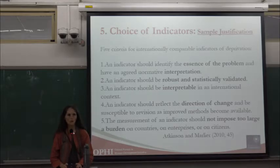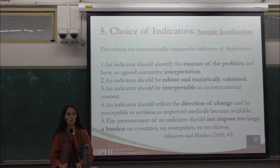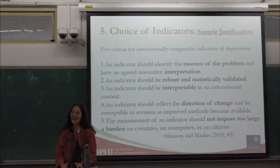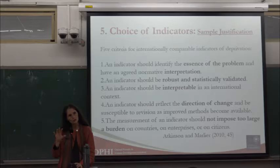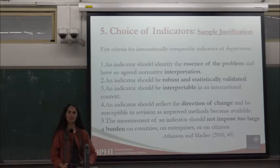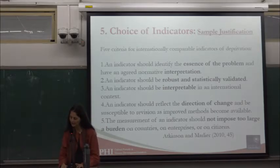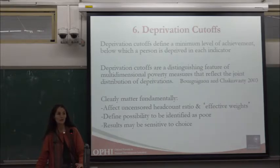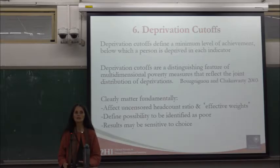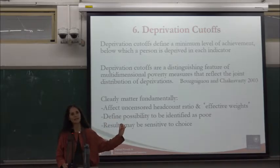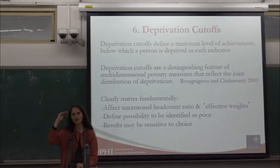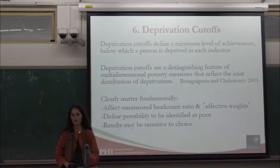When you come to your methodological report, justify each indicator — if you have ten indicators, each one will have a paragraph justifying it. We are also working on a handbook that will include a sample methodological document you can draw from. The deprivation thresholds, or cutoffs — the vector of Z values used to identify whose achievements are deprived — move us from the achievement matrix to the deprivation matrix. They identify the minimum level of achievement: if you are strictly below the deprivation cutoff, you are deprived; if your achievement equals the cutoff, you are not deprived.